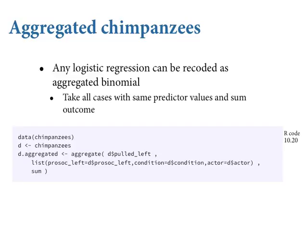Before we leave the chimpanzee example, I want to show running the same model in a different way. For any logistic regression, you can take all rows with exactly the same predictor values and aggregate them into a single row by summing the outcome. There's a nice function called aggregate for this. We aggregate the outcome variable — pulled left — conditional on the values of prosocial_left, condition, and actor.